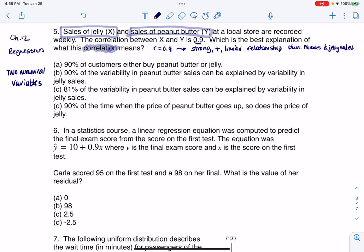So this says 90% of customers either buy peanut butter or jelly. No. 90% of the variability in peanut butter sales can be explained by the variability in jelly sales. Okay, this is an interpretation of r-squared, at least the phrasing of it, not r. All right, so that's not correct. All right, we've got 81% of the variability in peanut butter sales can be explained by the variability in jelly sales. Same thing here.